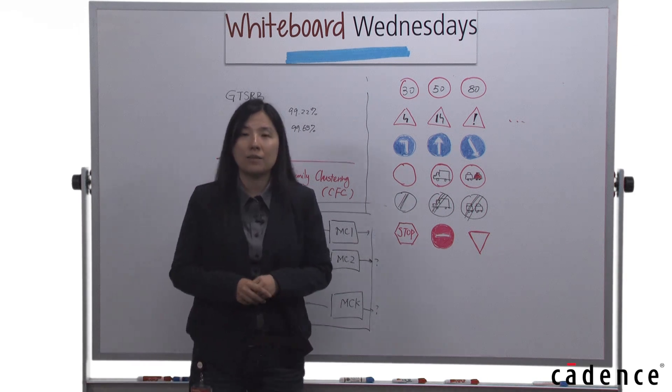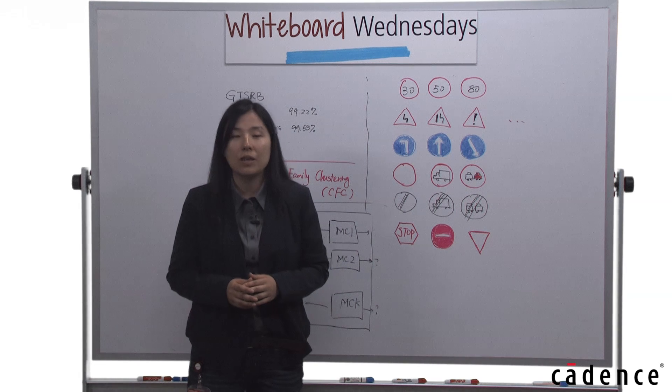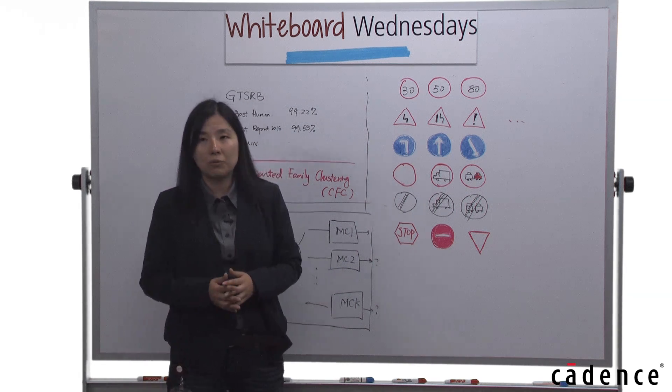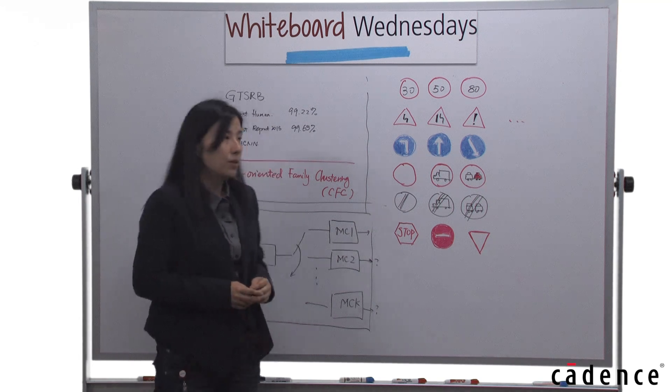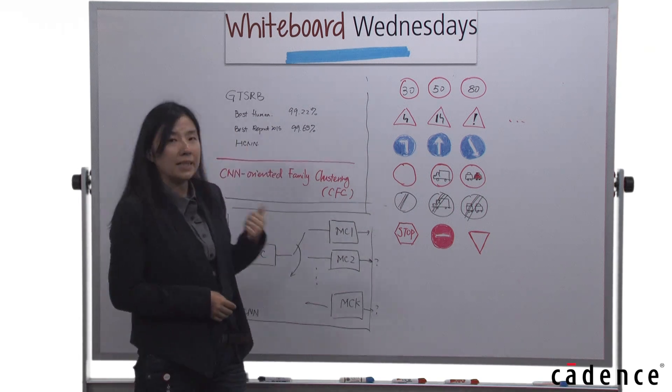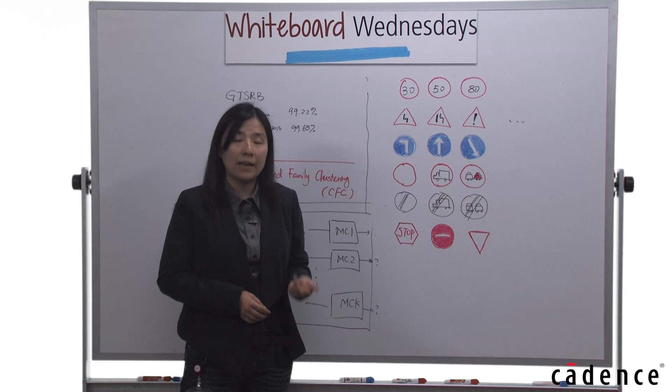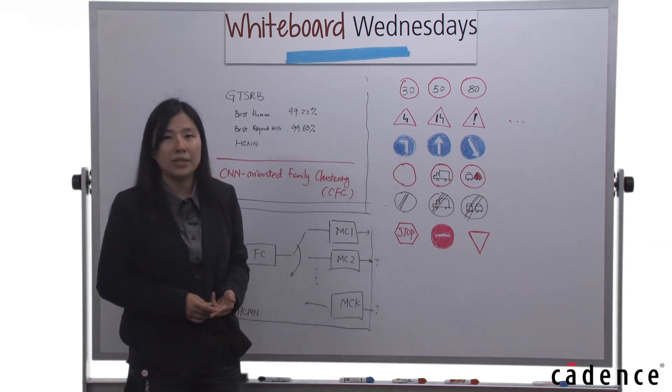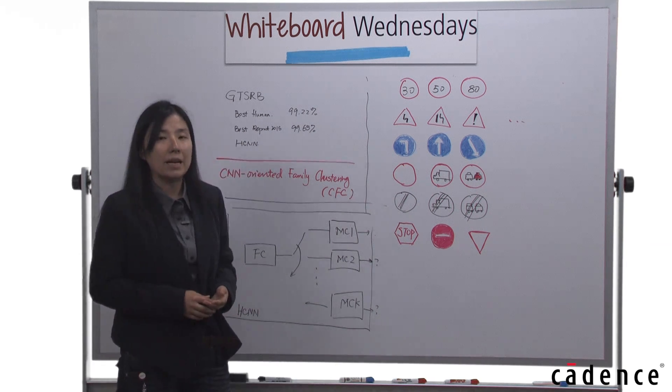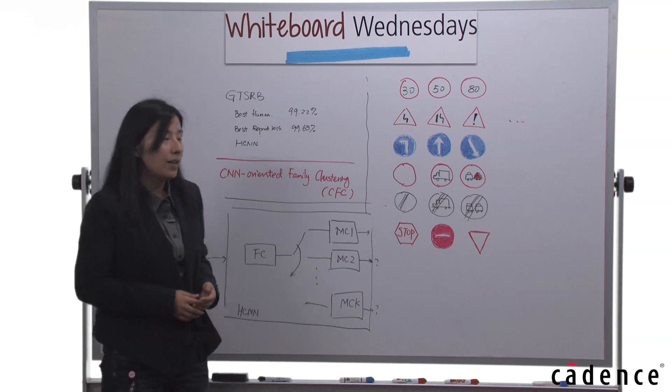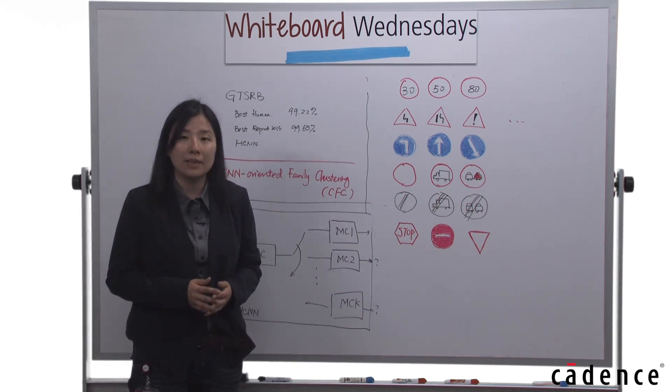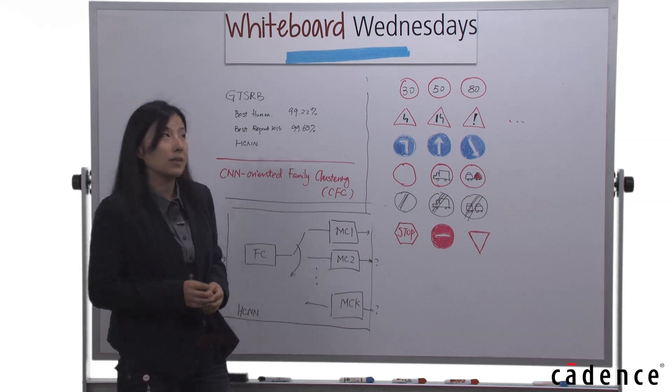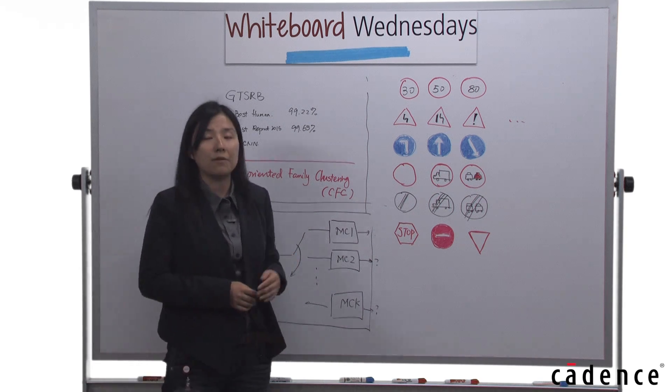In this way, we find the K families we need for traffic signs. By running this seeding, growing, CNN training, and labeling procedure, we end up with five families. These are the five families determined by the CNN algorithm, not the six families designed for human beings.